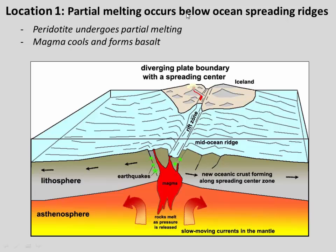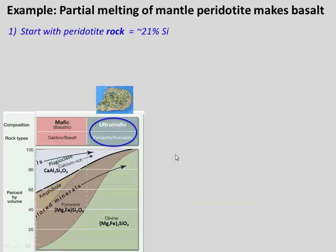Let's look at some locations where partial melting happens and where new crust is created. The first location is beneath ocean spreading ridges. Mantle peridotite is convecting — it comes up beneath the spreading ridge and partially melts, creating a magma with a new composition. That magma cools and forms basalt, which is basically oceanic crust. So this is happening under a mid-ocean spreading ridge. Now let's look at the chemistry of this process.